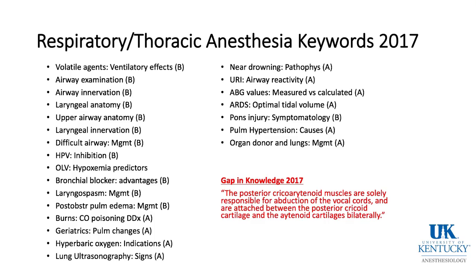ABG values: pH, PaO2, and PaCO2 are measured, while bicarbonate and base deficit are calculated. With ARDS, keeping tidal volume lower — around 6 mL per kilogram — and keeping peak airway pressures or plateau pressures less than 30 is optimal in patients with adult respiratory distress syndrome.